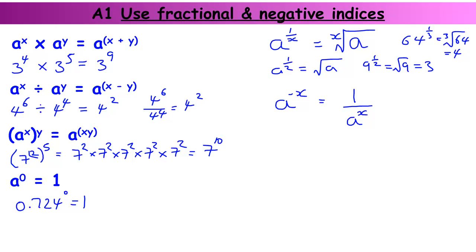And then the trickiest one: negative powers. All you really need to remember here is that a negative power means 1 over the normal power. So if I've got 3 to the power of minus 5, that's 1 over 3 to the power of 5. So that's reminding you what the rules do — I'm going to go through some examples now and show what they mean.